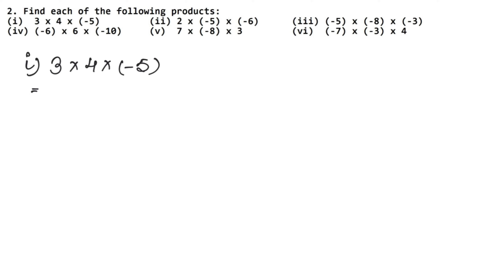In this case, if you multiply the first two digits and then multiply the third, or you multiply the last two digits first and then multiply the first one, the answer will be the same. This is called the associative law of multiplication. So there are two ways: you can multiply the first two digits first, and then multiply the third.